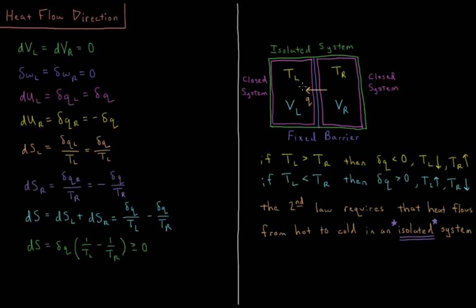Alternatively, if the left temperature is lower than the right temperature, T_L < T_R, then 1/T_L is greater than 1/T_R, and (1/T_L minus 1/T_R) is a positive number. So dQ must also be positive for the entropy change to be greater than or equal to zero. Heat flows from the right to the left — energy is taken out of the right system and flows into the left system as heat. This makes the temperature of the right go down and the temperature of the left go up, continuing until the temperatures are equal and thermal equilibrium is reached.